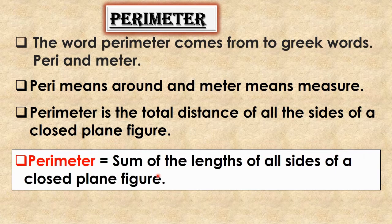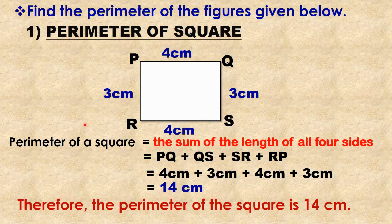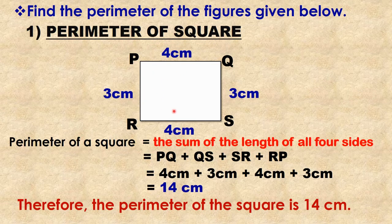Today we will learn how to find the perimeter of the square, triangle, and rectangle. Let's start with the square. A square is a closed figure in which all the sides are equal and all the angles are right angles. The perimeter of a square is equal to the sum of the lengths of all four sides.